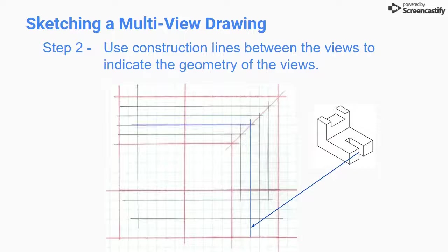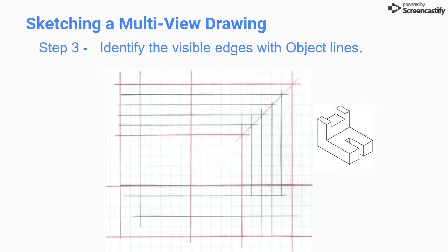Keep in mind that many of these edges will be seen in more than one view, so you can draw them using lines that extend from one view to the next. Later you will darken the parts of the line that represent the object and erase any parts of the line that fall outside the view. The actual edges of the object can get darkened and made into sharp, bold object lines.